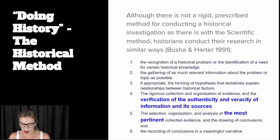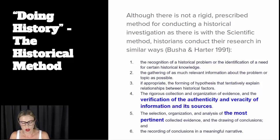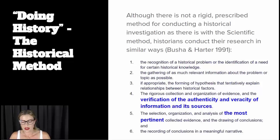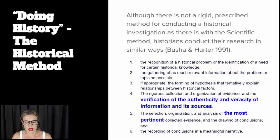Then they gather as much relevant information as they can about the problem. Looking at that evidence, they might form a tentative hypothesis to explain the historical problem. Then they would rigorously collect more evidence and organise it into an argument, taking particular careful interest in the verification of the authenticity of those sources and the truth of the information and its sources. After they've done that, they would select, organise and analyse the most important collected evidence and draw some conclusions about what that evidence tells them — what's the answer to the historical problem?